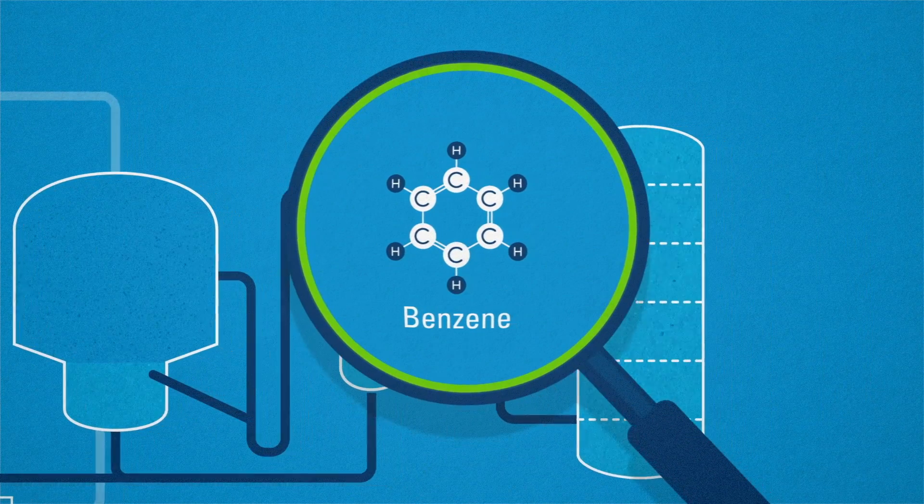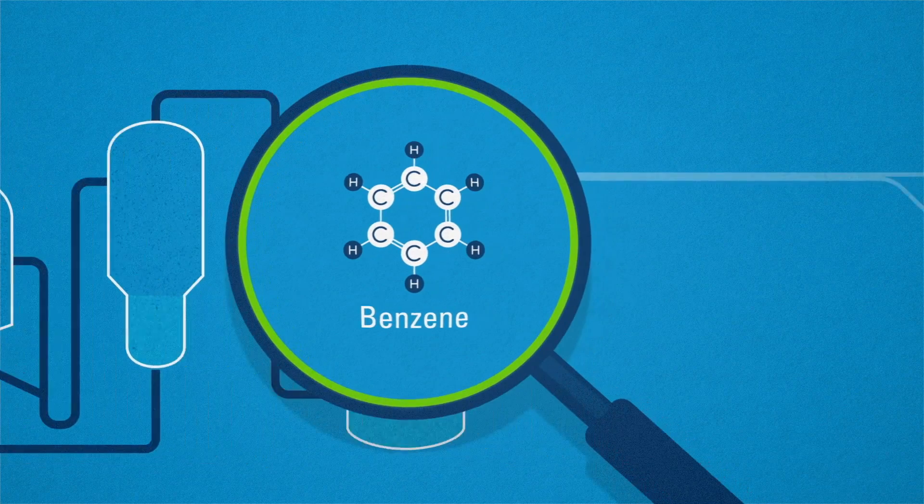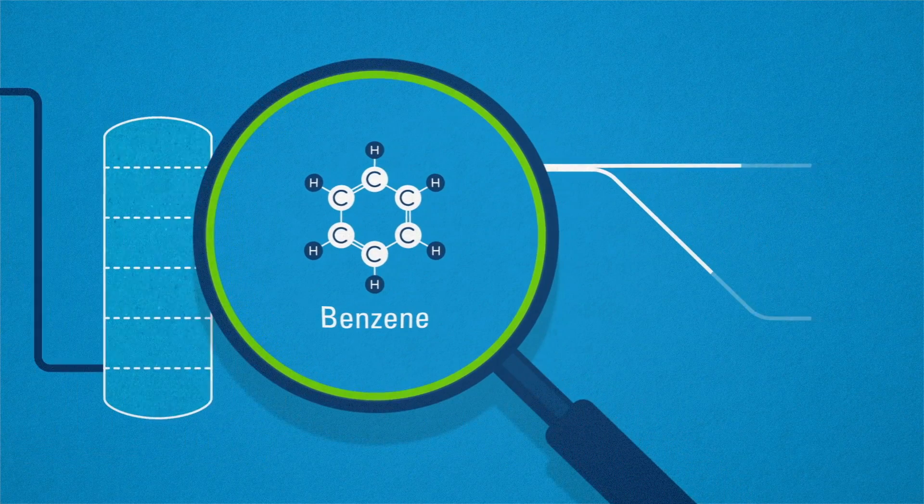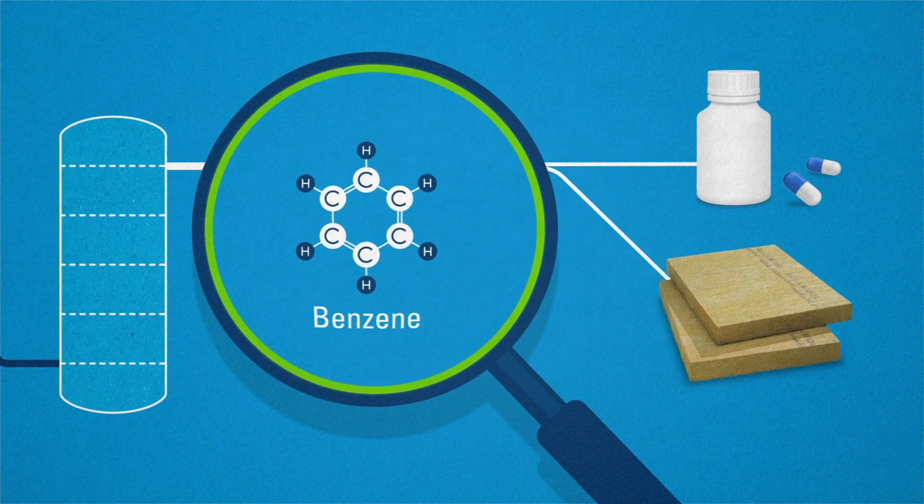Benzene is a chemical compound that's essential for binding elements. It helps to produce things like medication or materials for insulation.